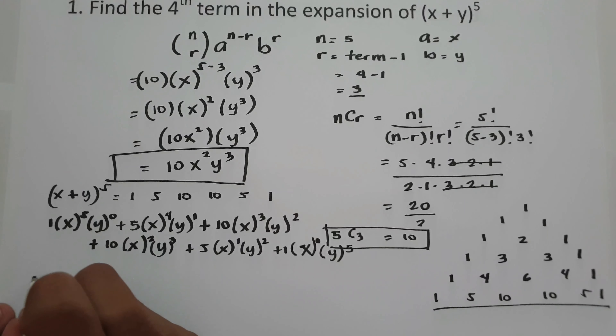So n taken r is 1, times 3x raised to 5 minus 5 which is 0, times 5y raised to 5. So 3x raised to 0 is 1, and 5 raised to 5 is 3125, times y raised to 5. The final answer is 3125y raised to 5. This will be the last term of the expansion of 3x plus 5y raised to 5.